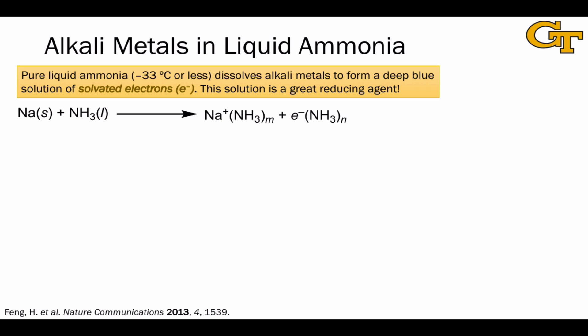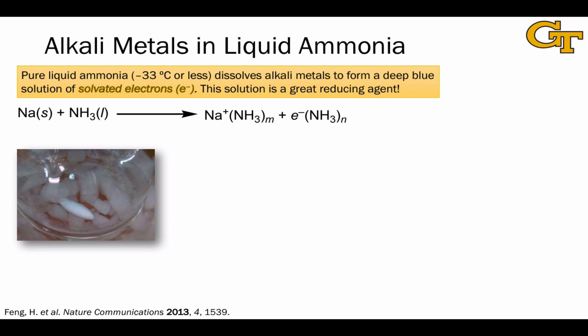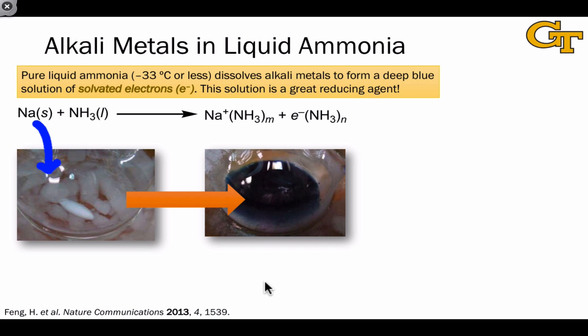Before getting into the organic chemistry, let's talk about what happens when we mix solid sodium and liquid ammonia. This image shows a colorless sample of liquid ammonia at minus 78 degrees Celsius — pure liquid NH₃, not a solution of NH₃ in water. When we take a hunk of sodium metal and add it into this solution, something interesting happens: the sodium metal starts to disappear and the resulting solution turns blue.